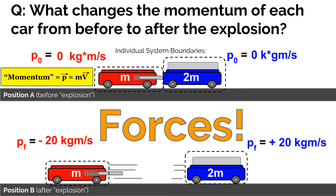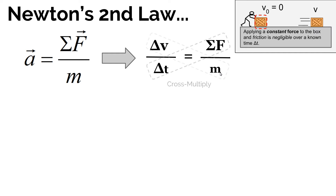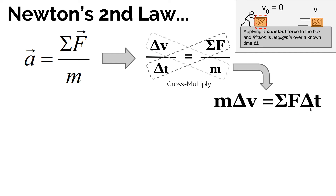Let's come up with an expression to relate how much force an object feels to how much it changes its momentum, using Newton's second law. The acceleration of an object equals the sum of forces divided by its mass. Imagine someone pushing a box with a constant force across a frictionless surface for a known amount of time. Acceleration is the change in velocity divided by time, so substituting gives us: change in velocity over change in time equals the sum of forces divided by mass. Cross-multiplying: M times change in V equals the sum of forces times change in time.